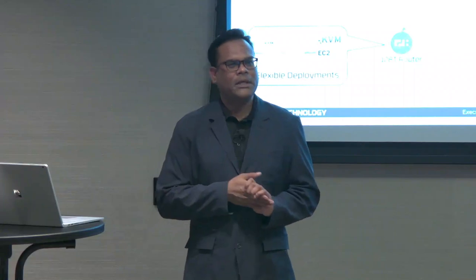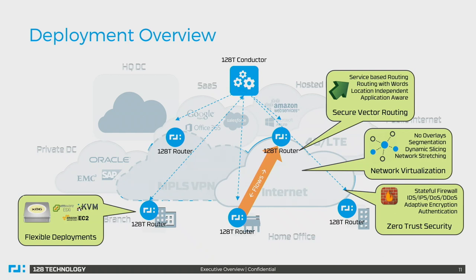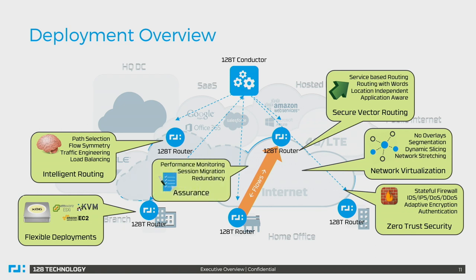We do a lot of stateful functions in the router: we're a layer 2 to layer 4 firewall, we do WAN optimization, and multiple load balancing algorithms. Adaptive encryption: if a flow is already TLS or IPsec encrypted, you can turn on a setting to not re-encrypt it, saving significant processing power. Among all our routers we monitor paths — delay, jitter, latency, SLAs, bandwidth usage. We have traffic engineering, QoS mechanisms, and sessions can be migrated from one path to another.